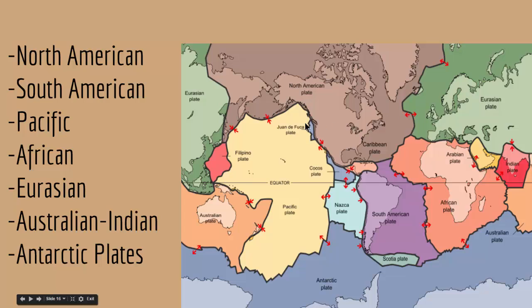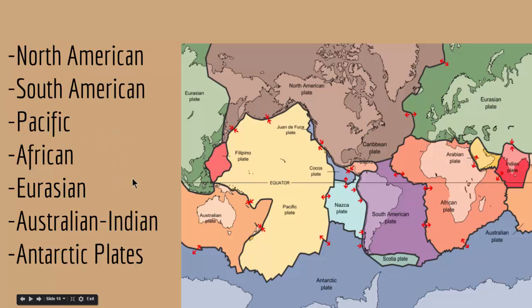As you can see in this picture — a flattened view of the Earth — we have about 12 to 13 plates that compose the crust. Seven of these plates make up the major part of Earth's surface: the North American plate, South American plate, Pacific plate, African plate, Eurasian plate, Australian-Indian plate, and Antarctic plate.